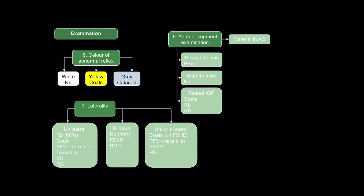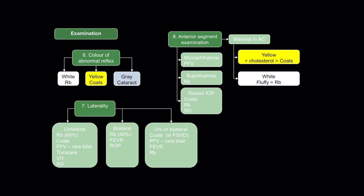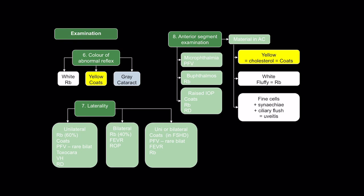Is there material in the anterior chamber? If it's yellow, it's cholesterol and that's Coates disease. If it's white and fluffy, it's retinoblastoma. If there are fine cells with synechiae and ciliary flush, it's more likely uveitis. And look for an iris coloboma, which is associated with the fundus coloboma.